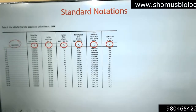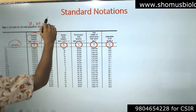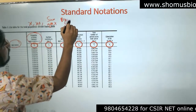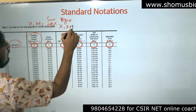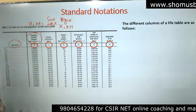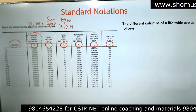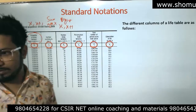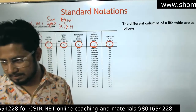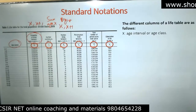The life table looks something like this, where you have age in years and the probability of dying between age x and x plus one year. This table has multiple questions in exams — you can easily answer from the table itself. All you need to know is what each column represents. Here, x is the age interval or age class.